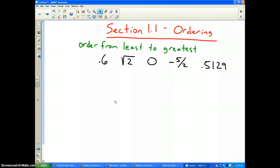The next section, section 1.1, is ordering numbers. We're going to talk about ordering numbers without a calculator, a very important skill. The directions say order the numbers from least to greatest, and our numbers are 0.6, square root of two, zero, negative five divided by two, and 0.5129.